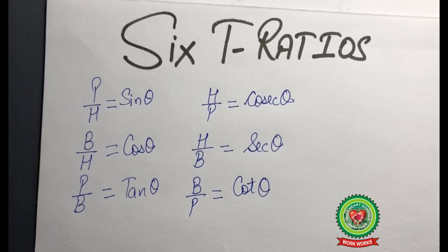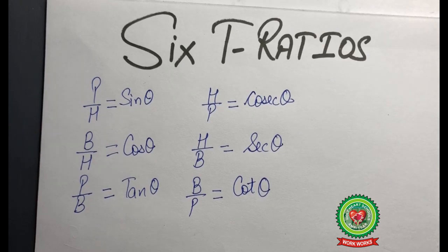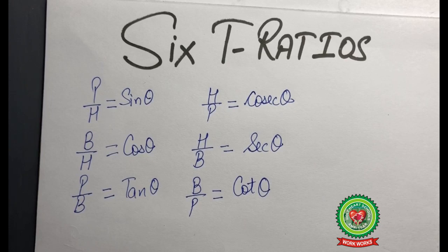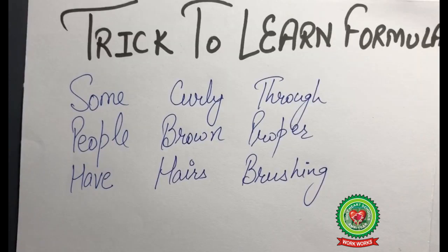So students, you have your six trigonometrical ratios and their names: P upon H equals sine theta, B upon H equals cos theta, P upon B equals tan theta, H upon P equals cosecant theta, H upon B equals secant theta, and B upon P equals cot theta.